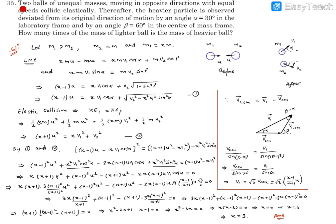Question number 35: Two balls of unequal masses moving in opposite directions with equal speeds collide elastically. Thereafter, the heavier particle is observed deviated from its original direction of motion by an angle of 30 degrees in the laboratory frame, and that angle is 60 degrees in the center of mass frame. How many times the mass of the lighter ball is the mass of the heavier ball?